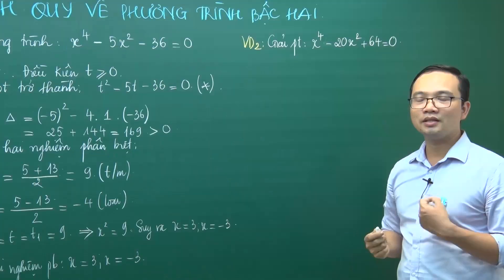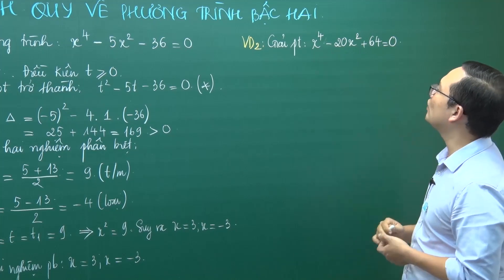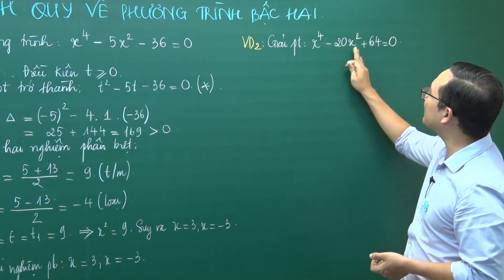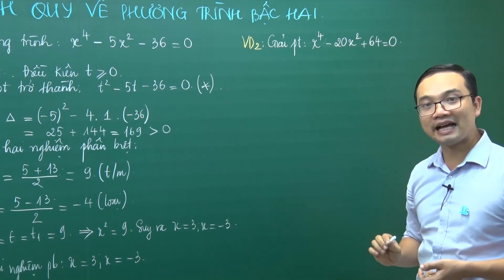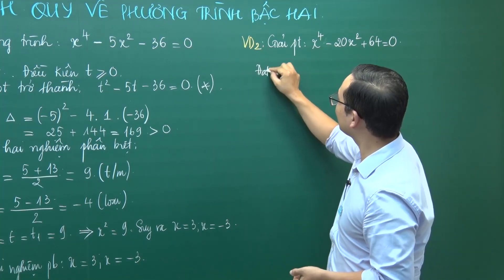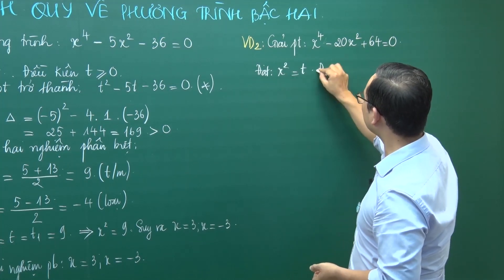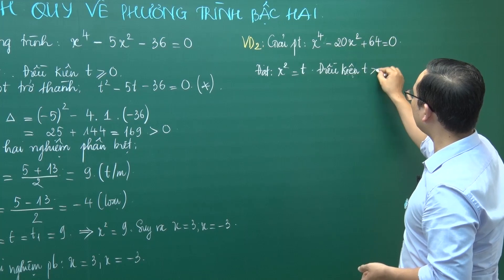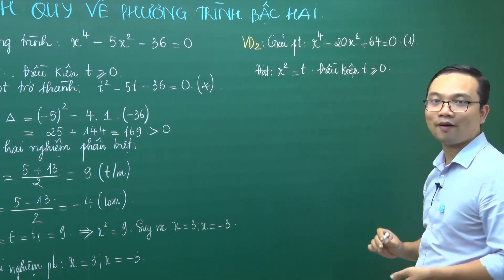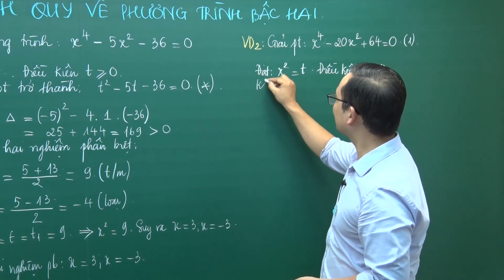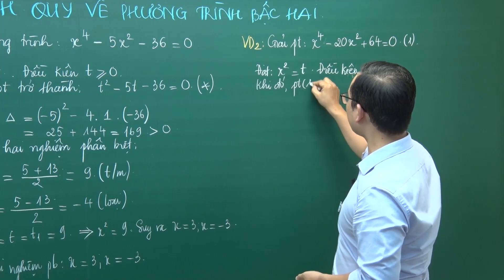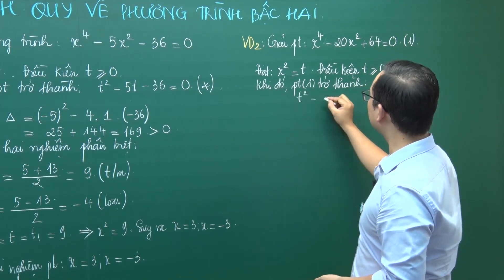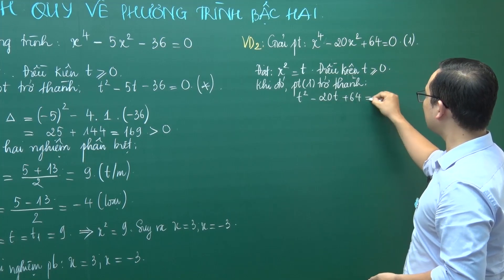Ví dụ số 2: Giải phương trình x⁴ - 20x² + 64 = 0. Đây là phương trình bậc 4 trùng phương — có x⁴, có x², có hệ số tự do, không có x³, không có x. Đặt x² = t, điều kiện t ≥ 0. Phương trình trở thành t² - 20t + 64 = 0.